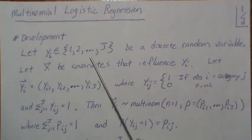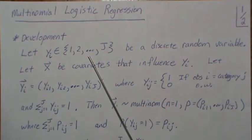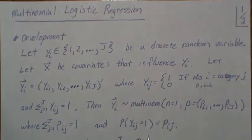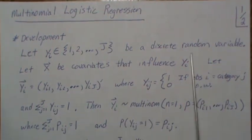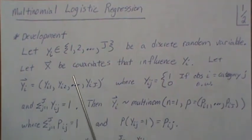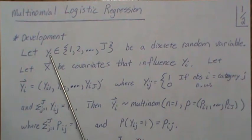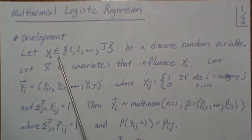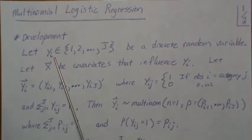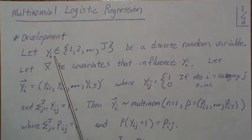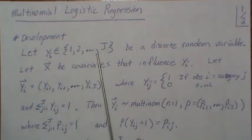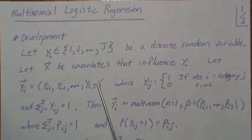It'd be a discrete random variable, and let's let X be the covariates that may influence the outcome of this variable. Now for each observation, or each person, sometimes I like to think about it like that, it can only take on one of these, and so it gets to pick one.